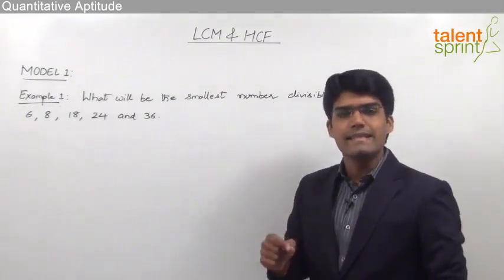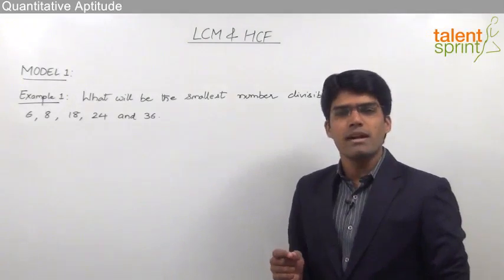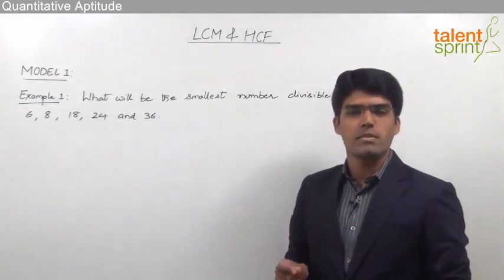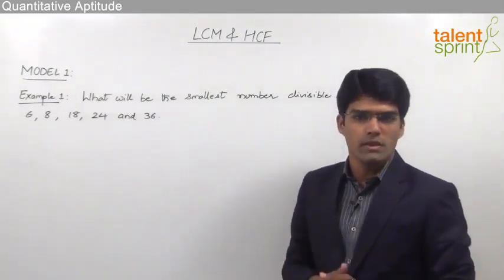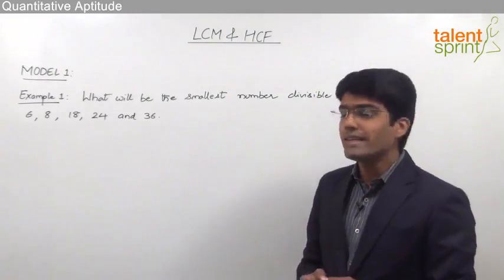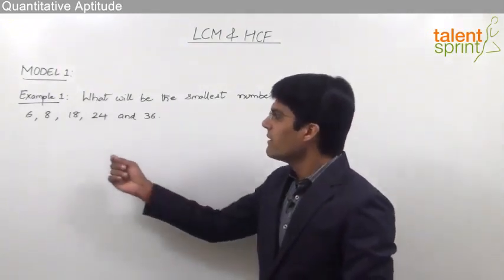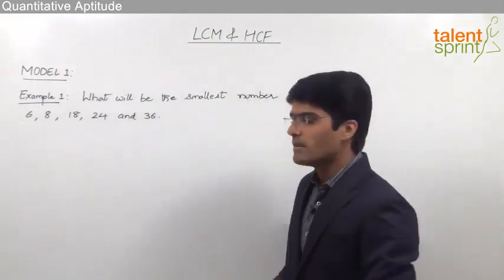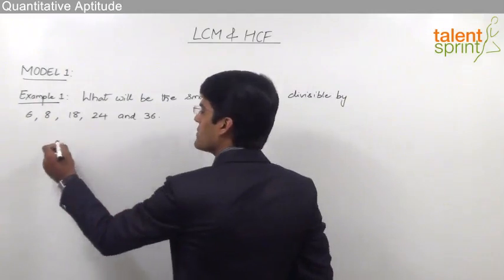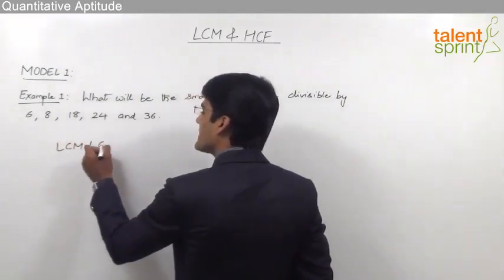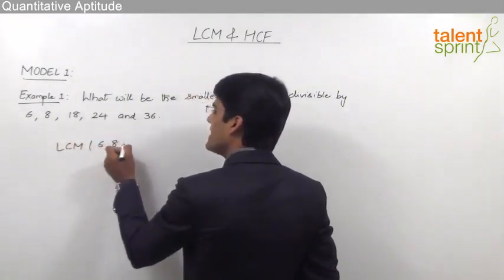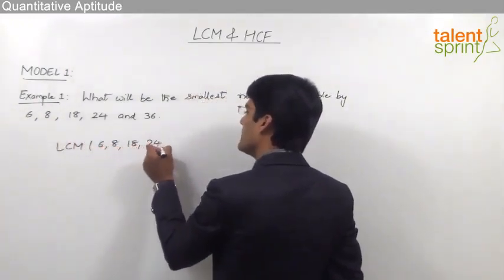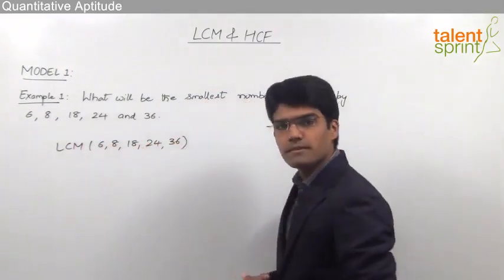We know that LCM is nothing but the smallest number, or the least number, which is divisible by all the given numbers. So very clearly here we need to find out the LCM of the given numbers. So the answer here should be LCM of 6, 8, 18, 24 and 36.